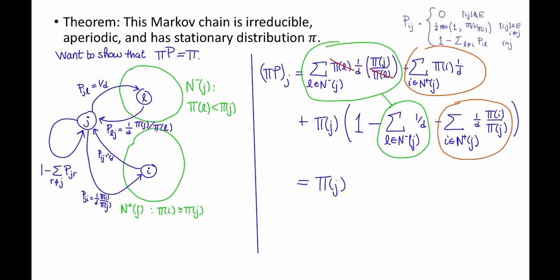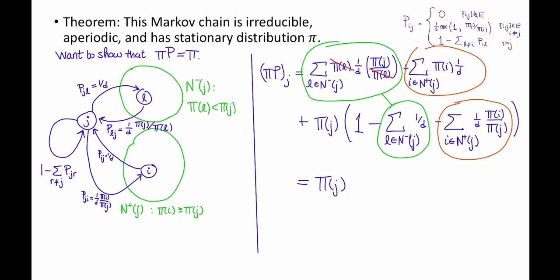So this is just equal to pi(j). We just showed that the jth entry of pi * P equals the jth entry of pi. Since this works for any j, we've concluded that pi * P = pi. That's what we wanted to show.